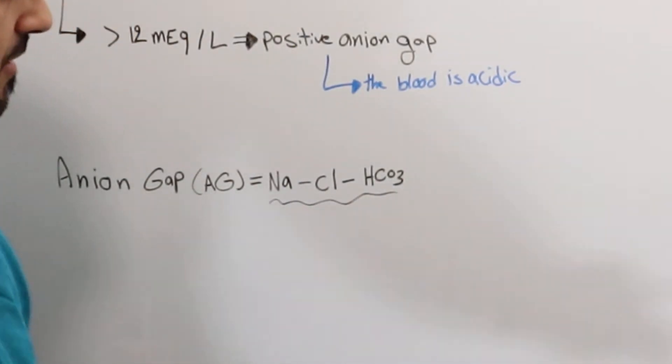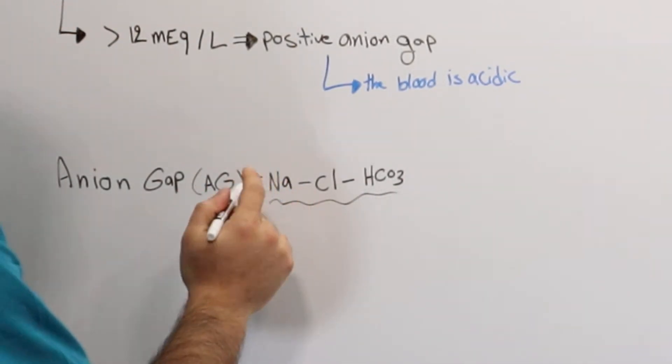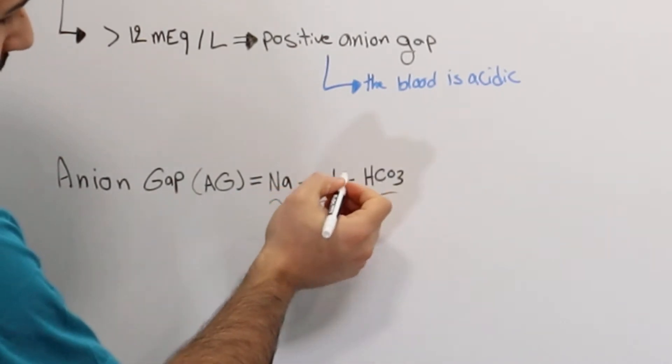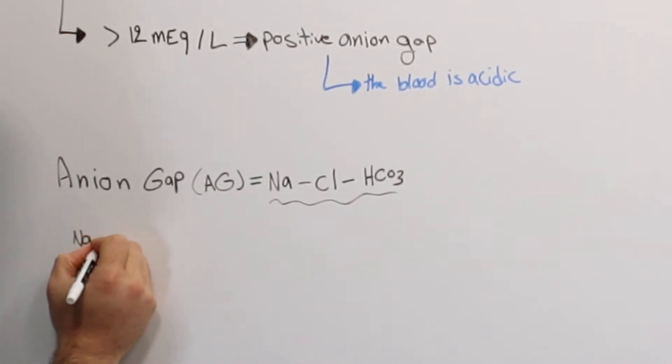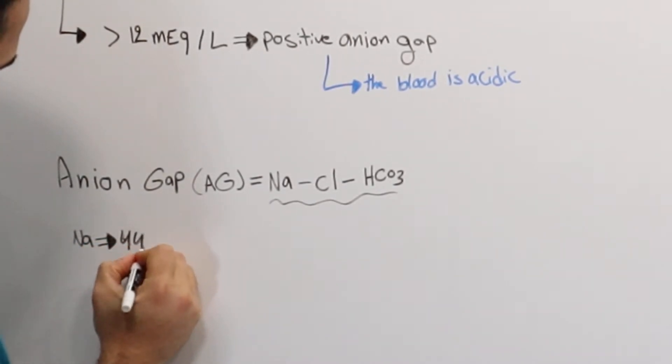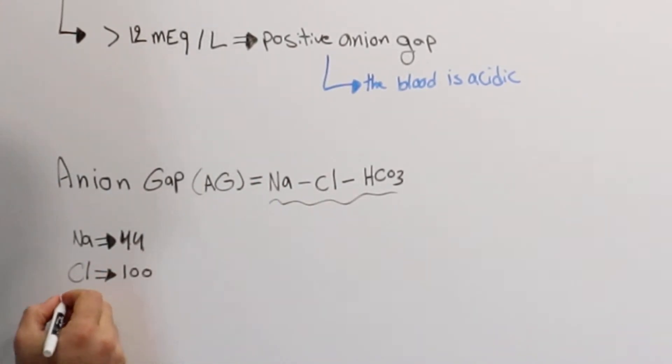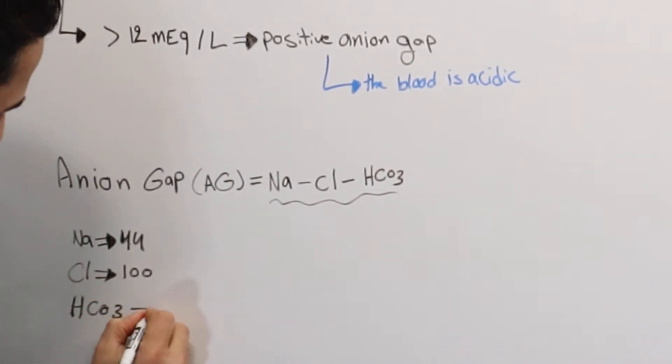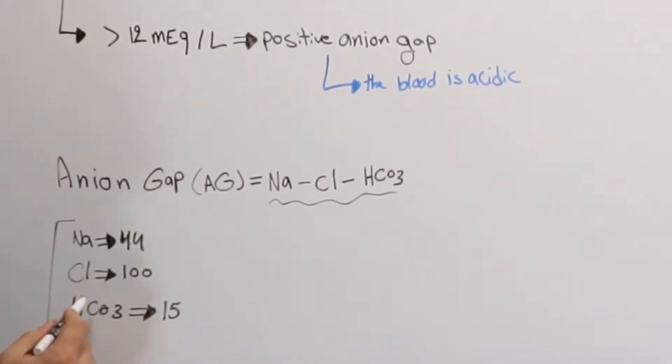And on exam, or if you're preparing for a test, you may see sodium, chloride, and bicarbonate given to you as values. For example, sodium might be 144, chloride 100, and HCO3 bicarbonate could be 15. What I'm trying to say, these are given to you as values, just like this.